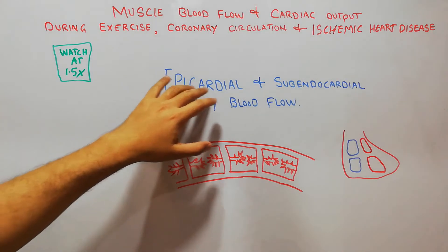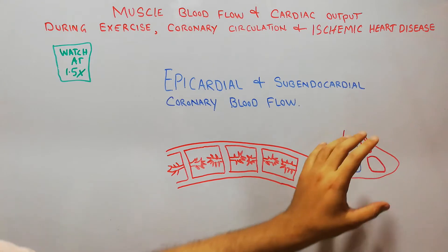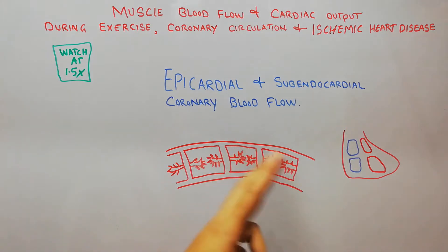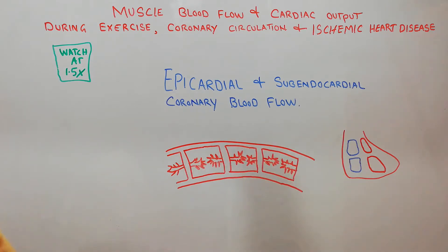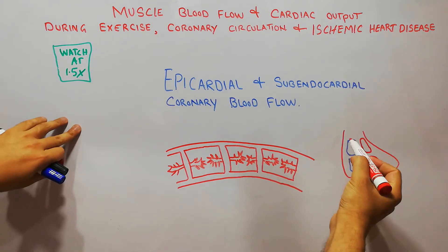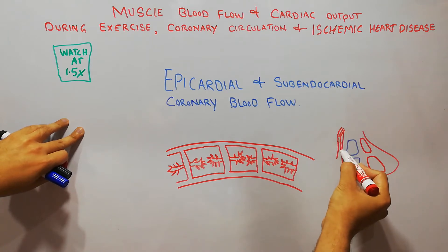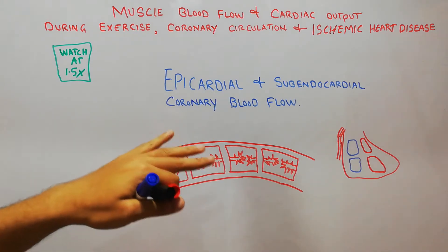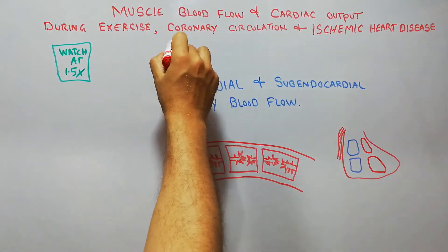Today we are going to discuss the epicardial and subendocardial coronary blood flow, which is basically a special system for the blood supply of heart muscles. We have discussed previously the blood supply of the heart — the two main arteries that supply the heart are the right coronary artery and the left coronary artery. In our new chapter on muscle blood flow, cardiac output during exercise, coronary circulation, and ischemic heart disease, we have reached the coronary circulation.